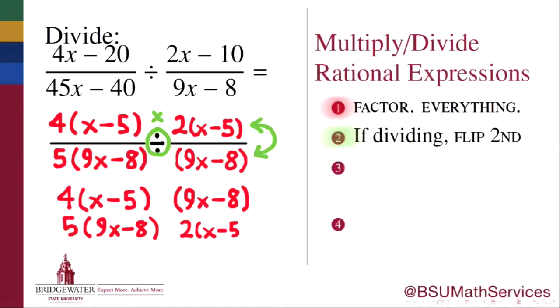When I turn the second fraction upside down, 9x minus 8 becomes the new numerator and 2 times the quantity x minus 5, the new denominator. And we're now faced with, instead of a division problem, a multiplication problem of these two rational expressions.